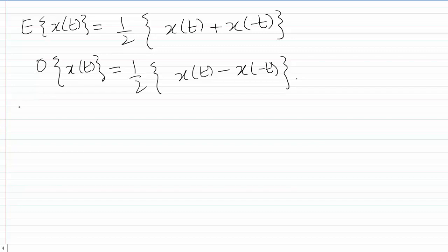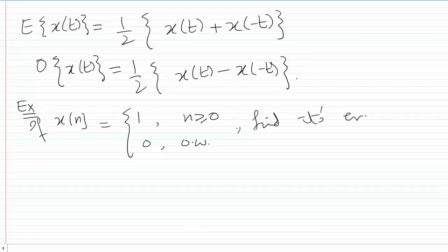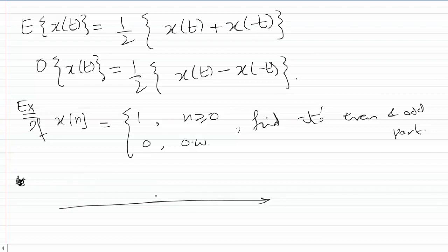Let's say we have x[n], which is given by this expression: x[n] equals 1 for n greater than or equal to zero, and zero otherwise. So x[n] looks like this: it is 1 for n equal to zero or any positive n, and zero for all negative values of n.